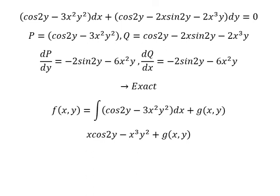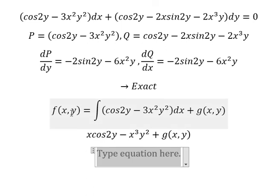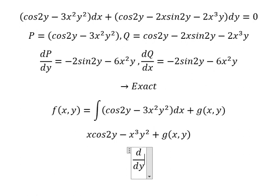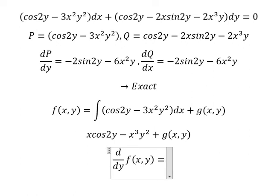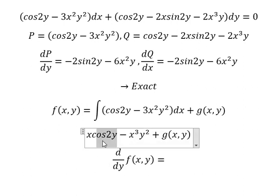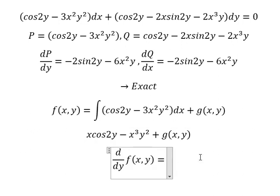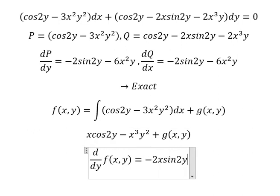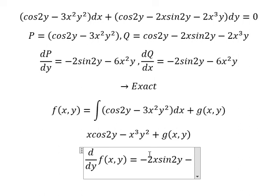Next, we need to do the first derivative of the function with respect to y. So this one gives zero, this one we have — sorry — negative two s sin(2y). This one we have y squared, so we have the number two.